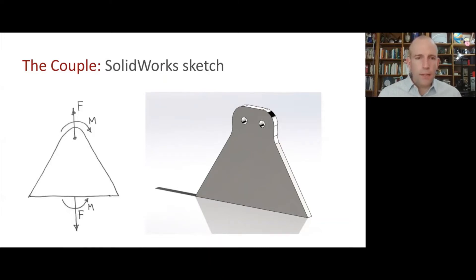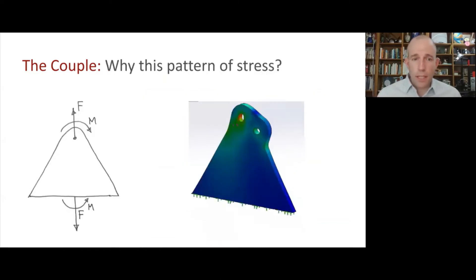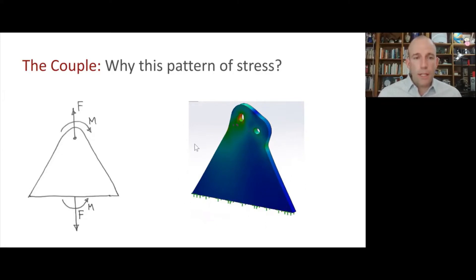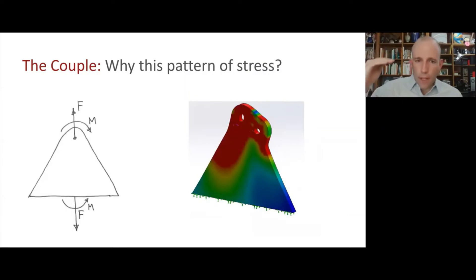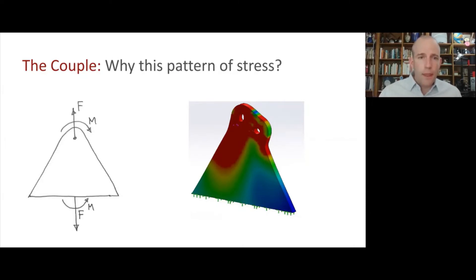We've run our finite element analysis and this is the pattern of stress we see. The question to answer is: why do we get this pattern of stress? Focus on the stress in the bulk of the material, not the corners. To make the pattern more evident, we'll set the red limit to a lower value. Try to answer why we have this stress pattern using concepts and language from solid mechanics, stress analysis, and statics and free body diagrams. Work on that a couple of minutes by yourself, discuss with a partner, and then come back. Hit pause now.